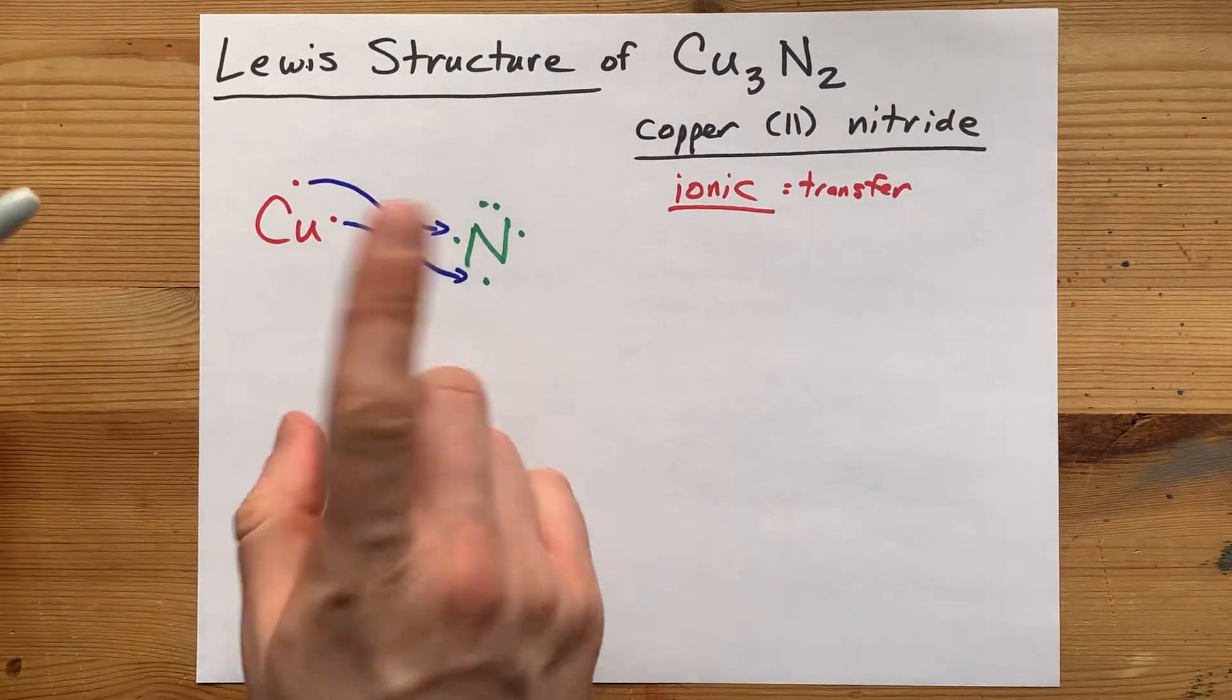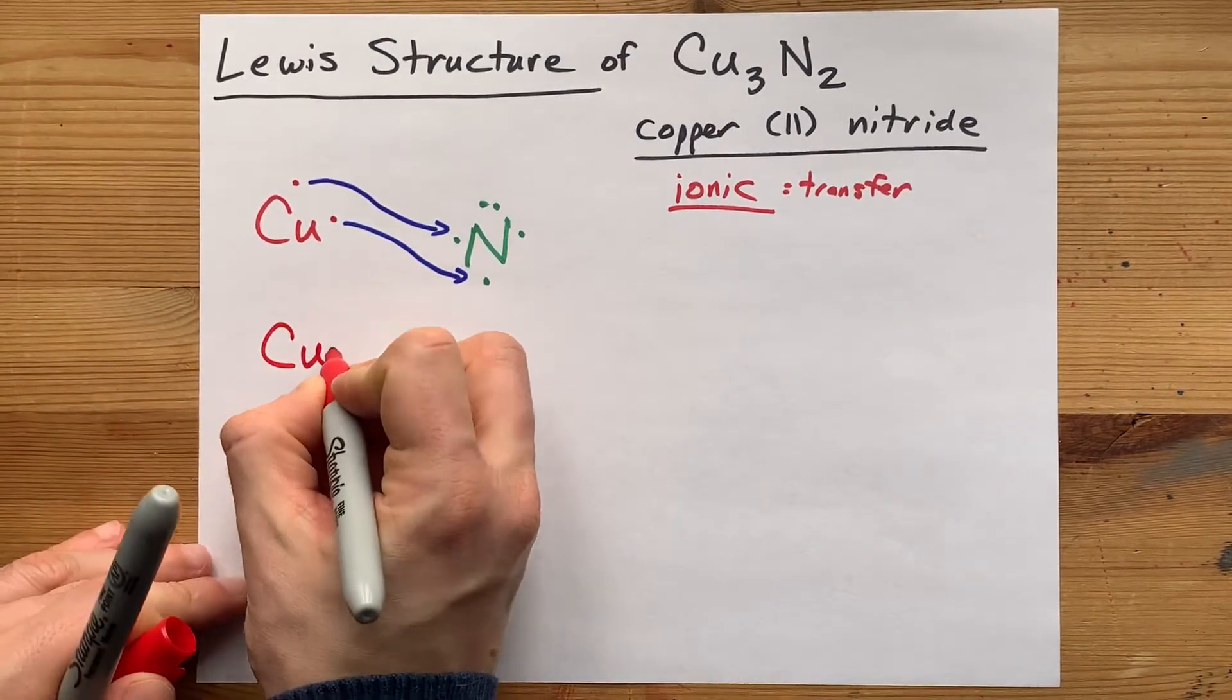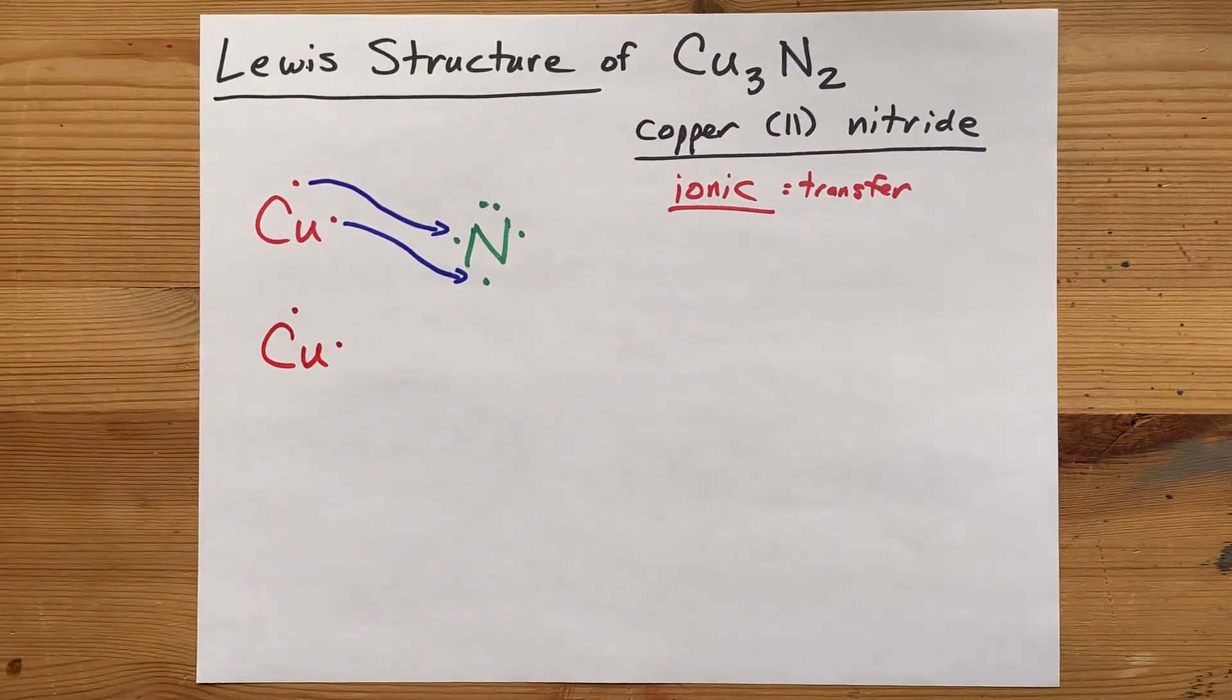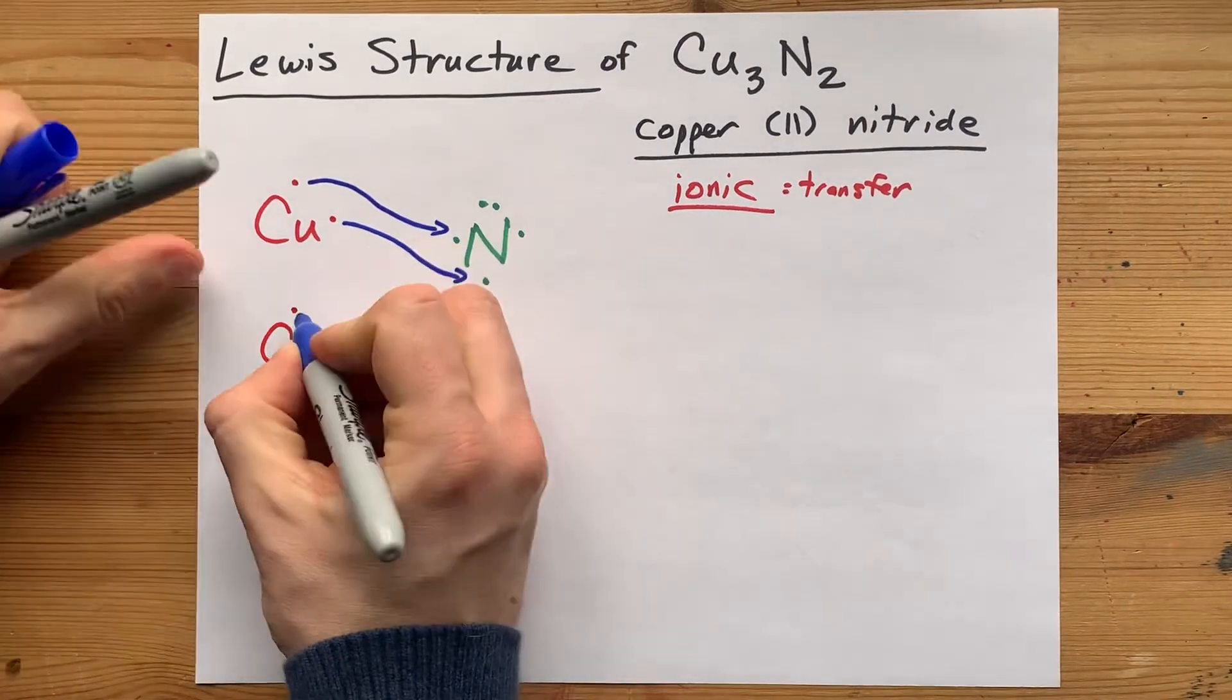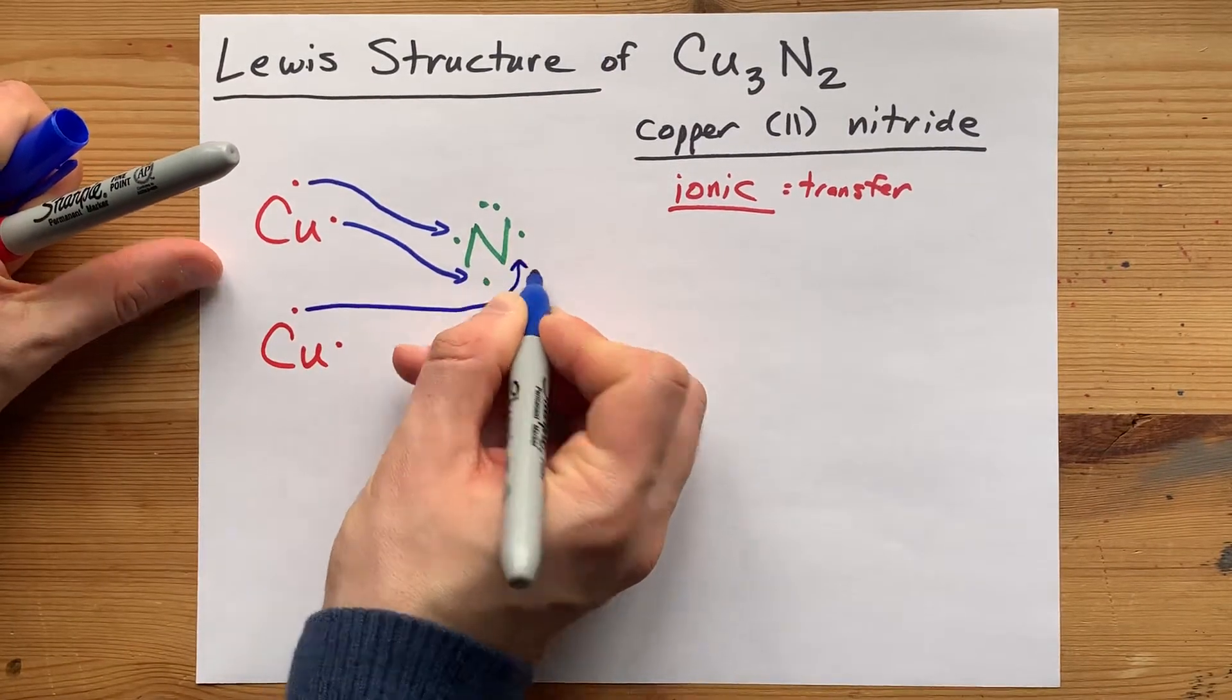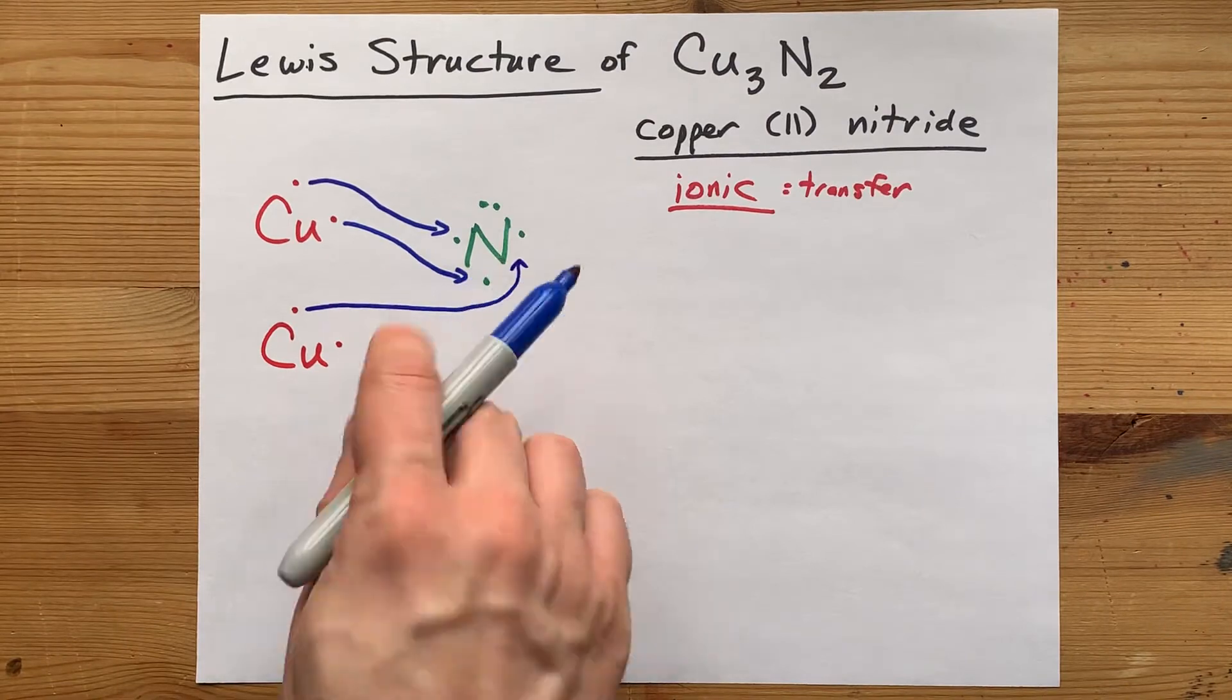You're going to need to build in another copper atom with its two valence electrons to donate that extra electron to nitrogen. Now, this nitrogen is happy.